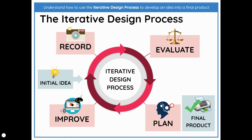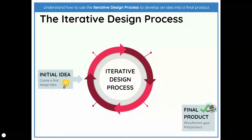So what do these things actually mean, and how do we get to the final product? The initial idea, as we've said, is a first design idea — it's the first idea that comes out of your brain. That's what we put into the iterative design process cycle.